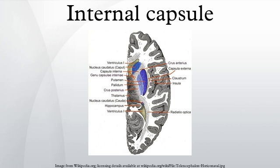The genu is the flexure of the internal capsule. It is formed by fibers from the corticonuclear tracts. The fibers in this region are named the geniculate fibers. They originate in the motor part of the cerebral cortex and, after passing downward through the base of the cerebral peduncle with the corticospinal fibers, undergo decussation and end in the motor nuclei of the cranial nerves of the opposite side. It contains the corticobulbar tract.